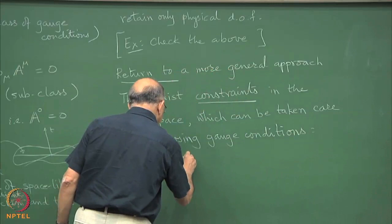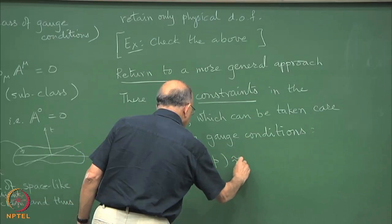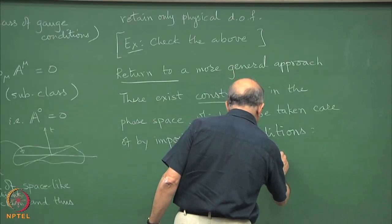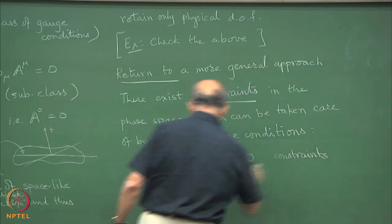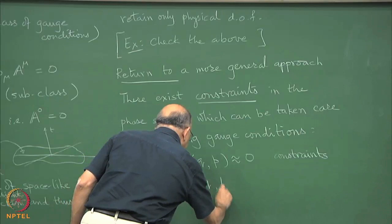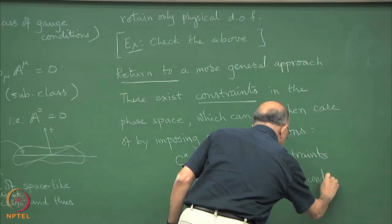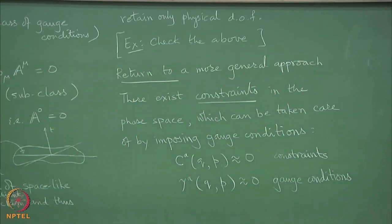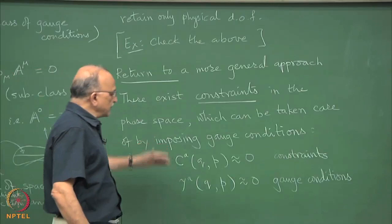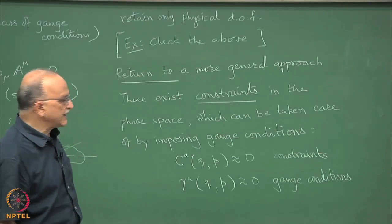We note that there are constraints in the phase space. There are constraints which can be taken care of by imposing gauge conditions. We went through this last time.